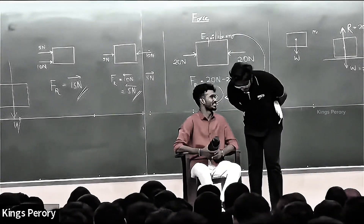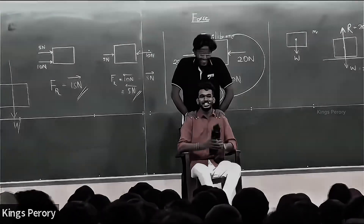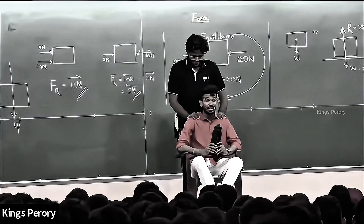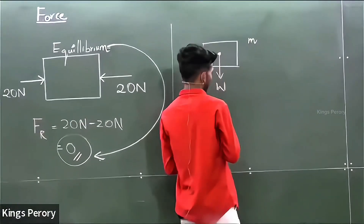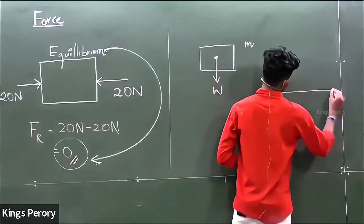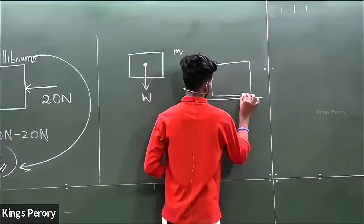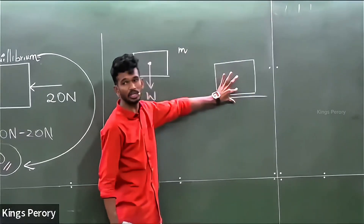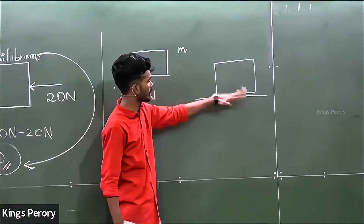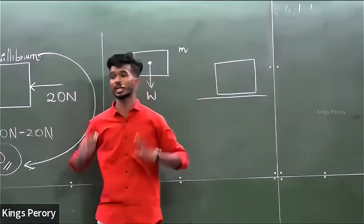When you keep an object on a surface, always remember when you are drawing two surfaces, keep a space between them. The second object is on the table — a box is there on the table.